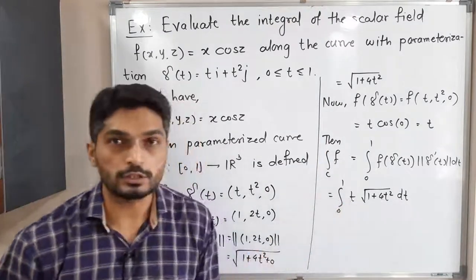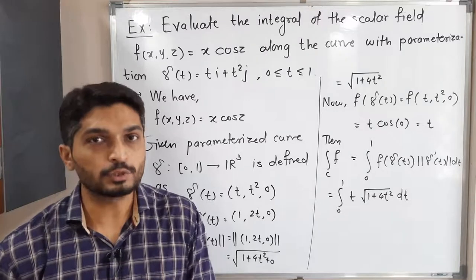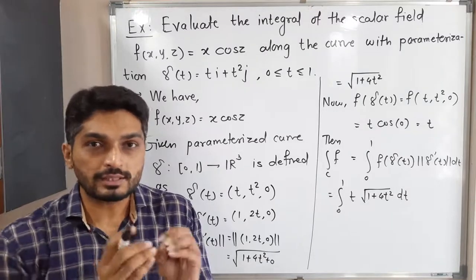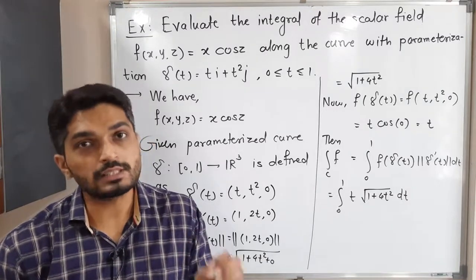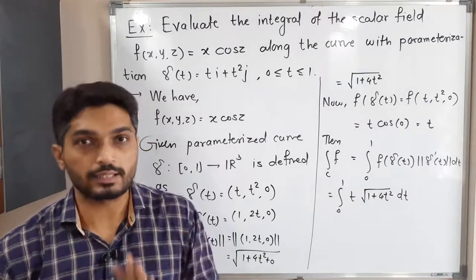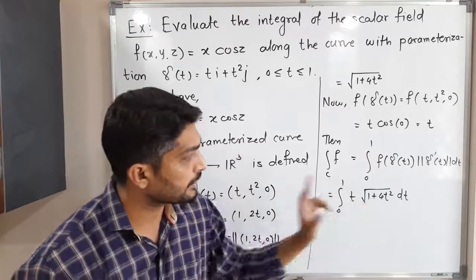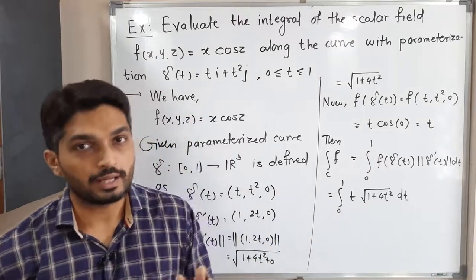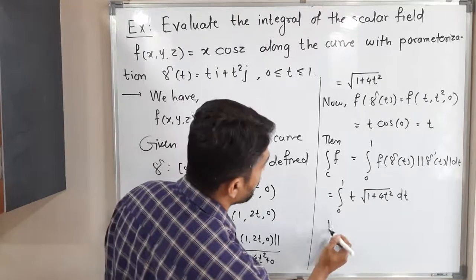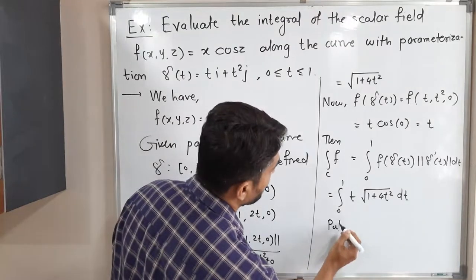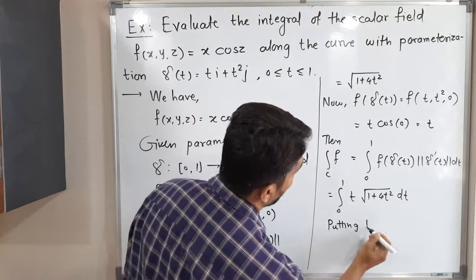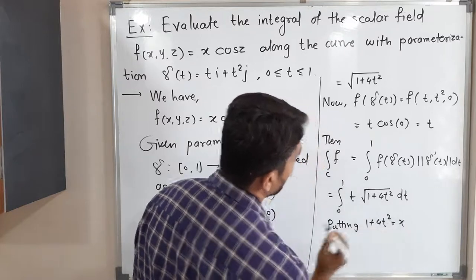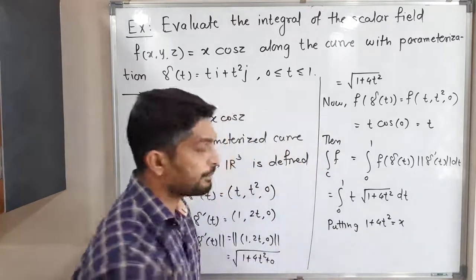We need a substitution where the derivative is easily adjustable. Let us put 1 + 4t² = x. When we make a substitution, the first task is to find the derivative and the second task is to find the new limits.